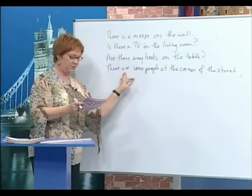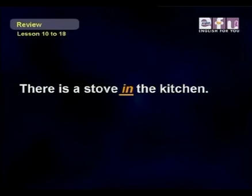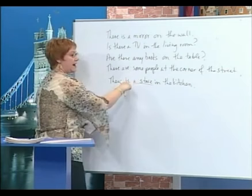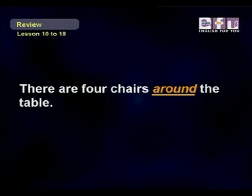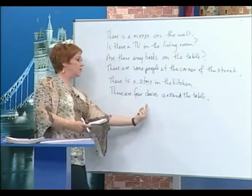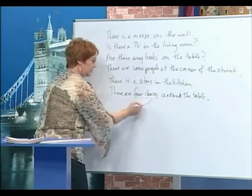Here are some examples. There is a stove in the kitchen — there is one, only one, so we look back to make it 'is.' There are four chairs around the table — this is plural because you have four chairs, so we look back to have 'are.' So, chairs are. Remember this about 'there is' and 'there are.'